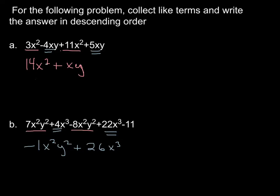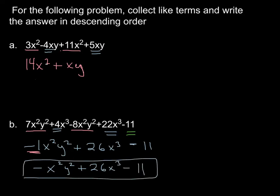And then finally, we're going to bring this 11 along for the ride. So finally, that is going to be, we are going to have a minus 11 here at the end. Now the last thing I'm going to do is I really don't want to write the negative 1 in front of the x²y². So we would write this as negative x²y² plus 26x³ minus 11. And then that would be our final answer here.